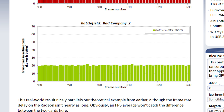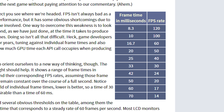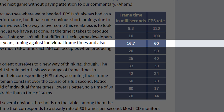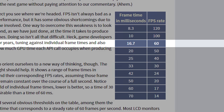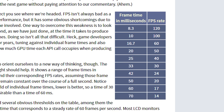Frame times are simply the number of milliseconds between frames, which technically means that they can be represented as a frame rate. By basic arithmetic, a 16.66 millisecond frame time would equate to 60 FPS, with lower frame times indicating higher frame rates.